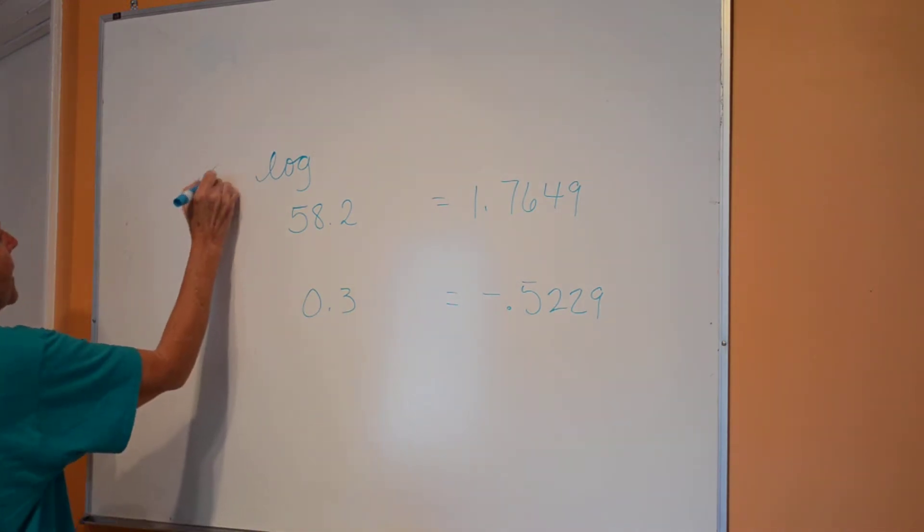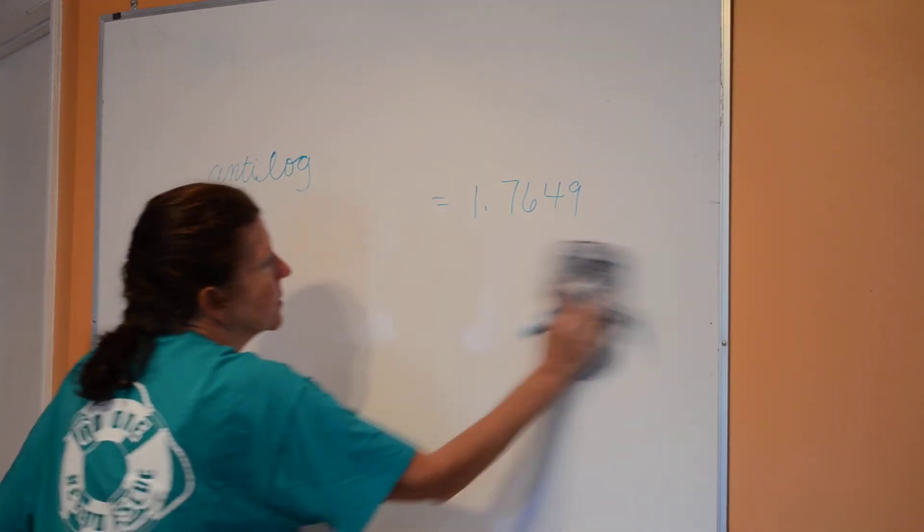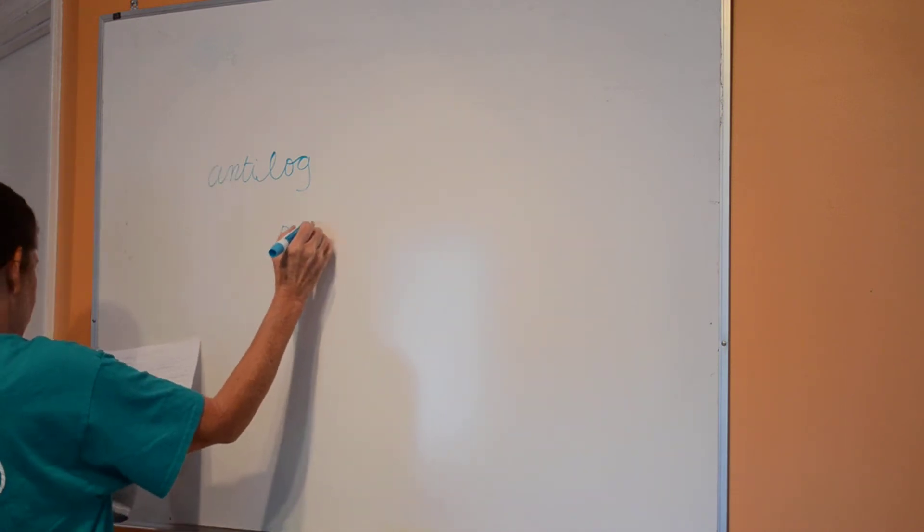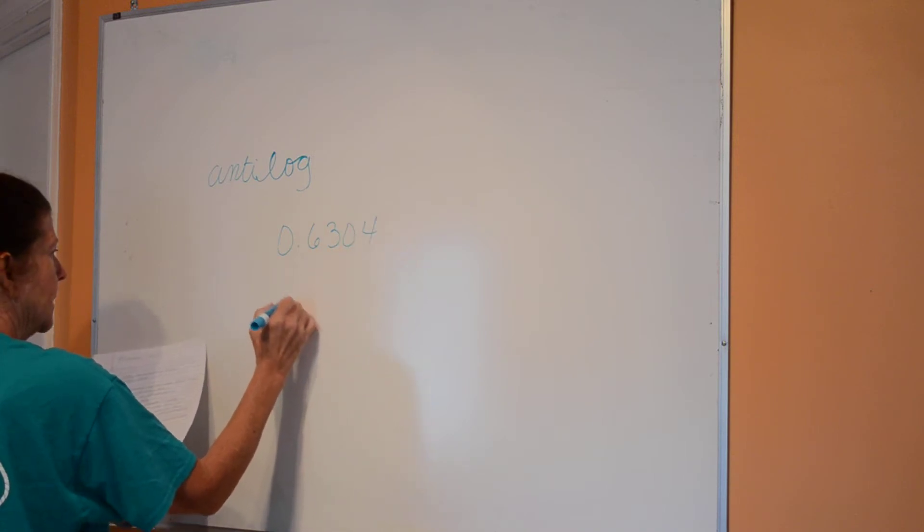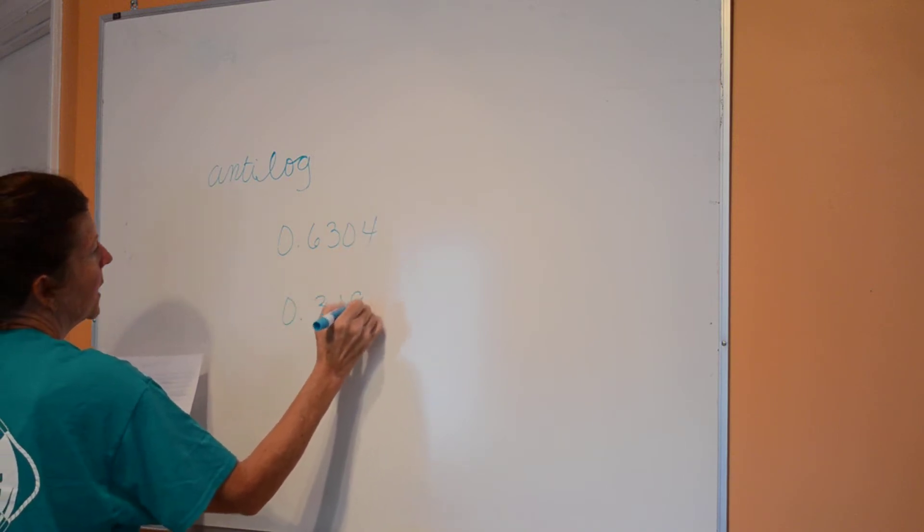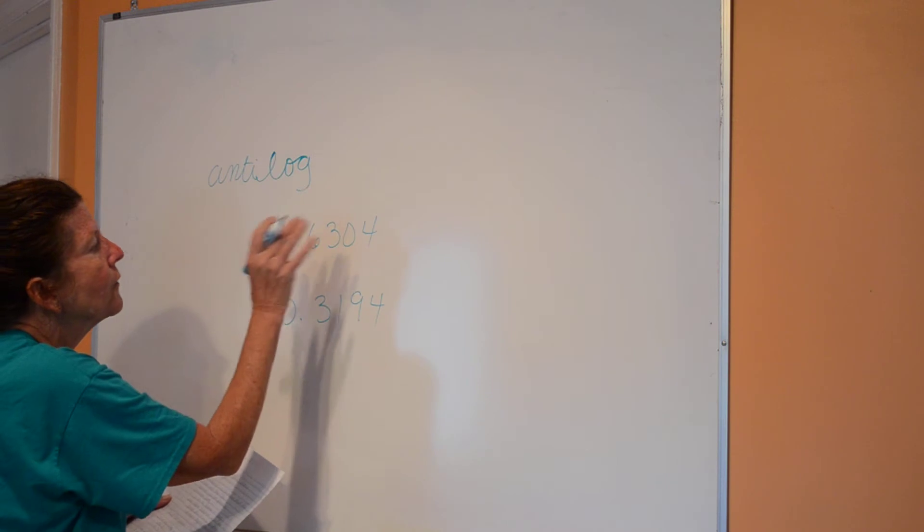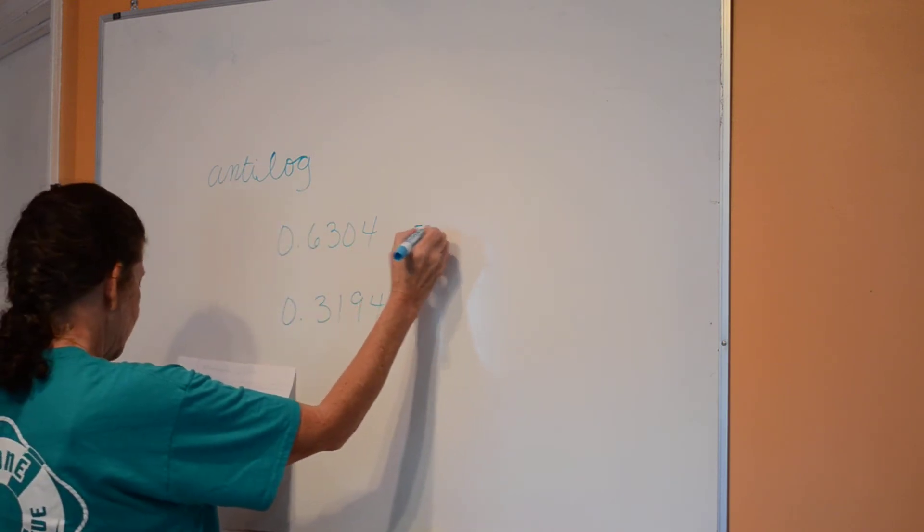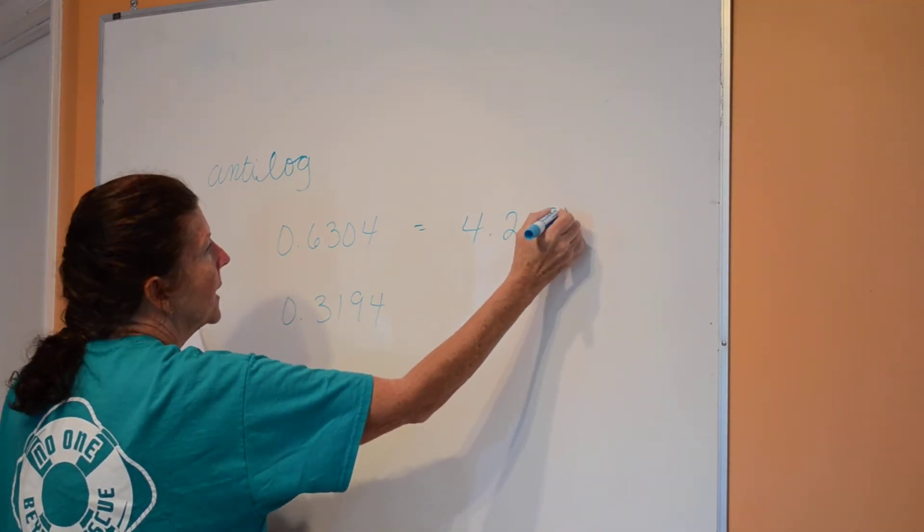Now I want you to find the anti-log of 0.6304 and 0.3194. The anti-log, remember, is your second and then your log. You're looking for the log of what number is going to give me that answer. And when I press that in, I find that the answer is 4.2697.